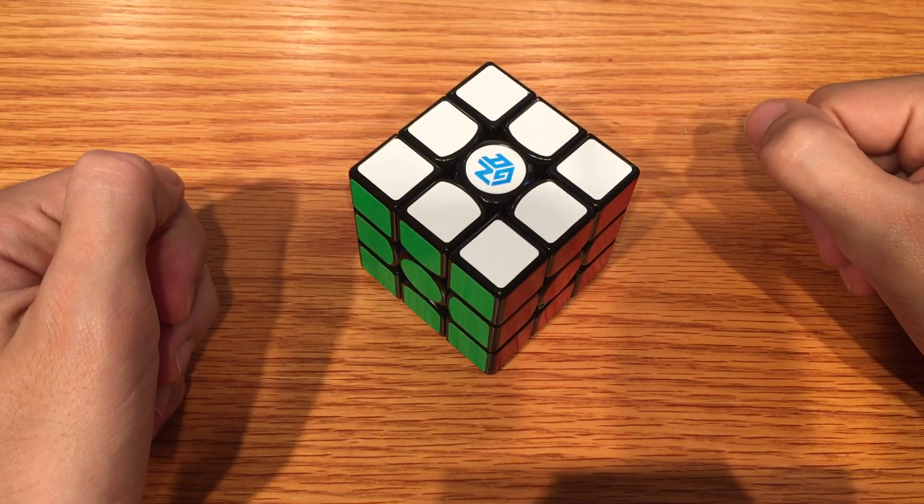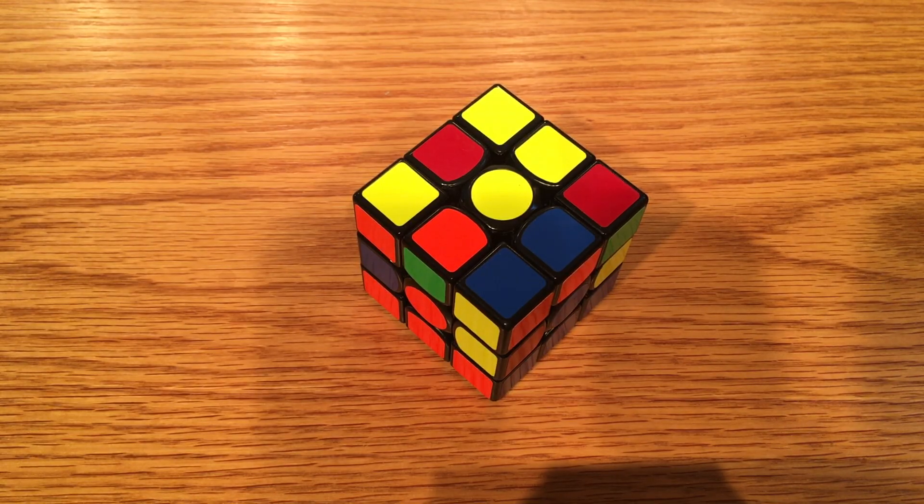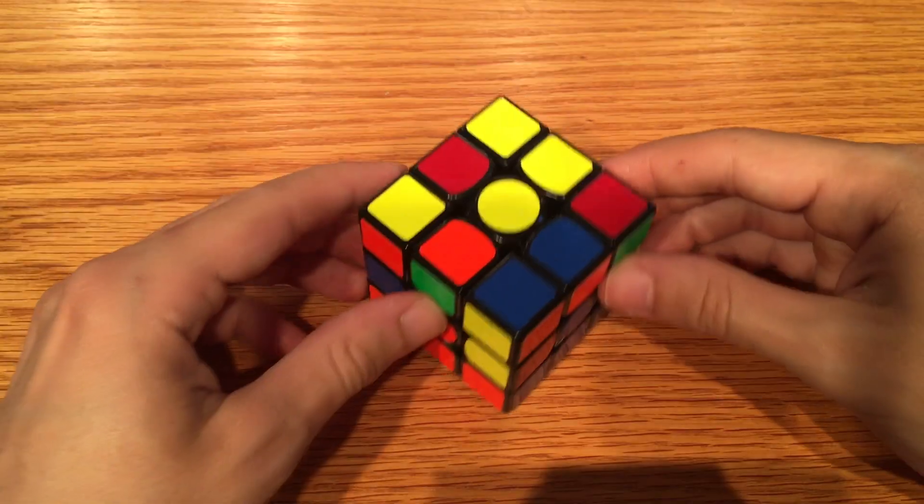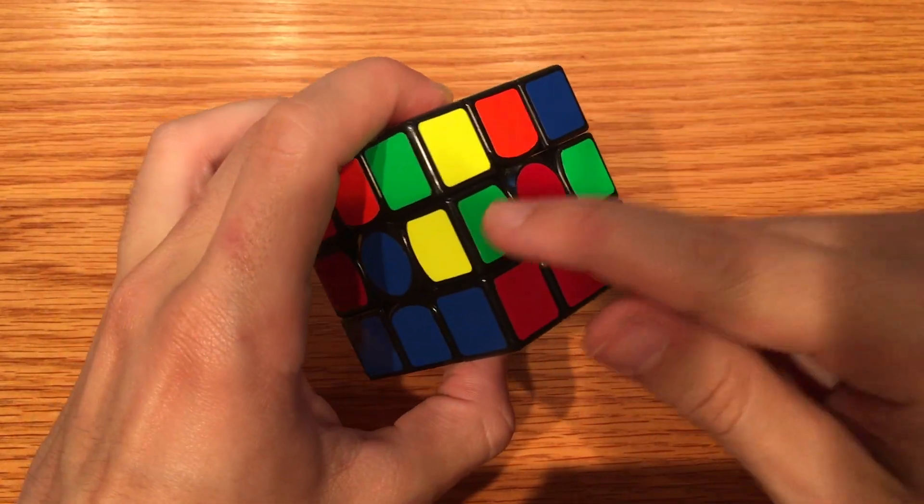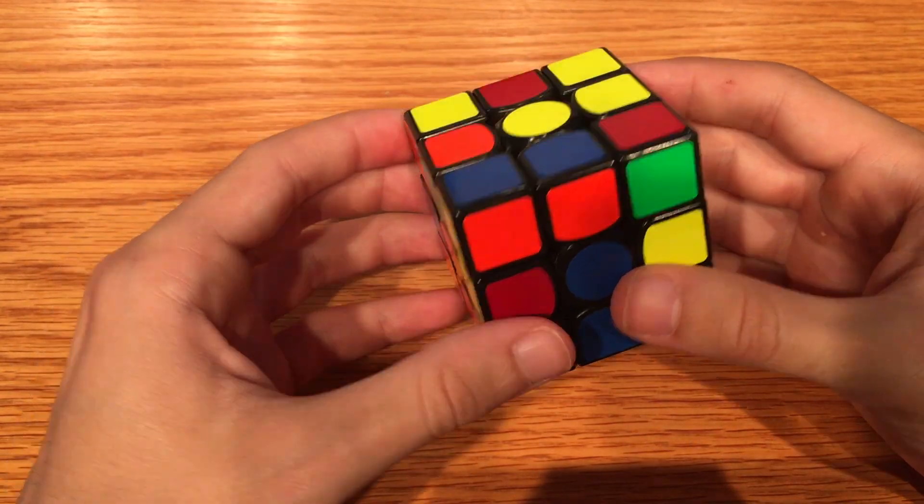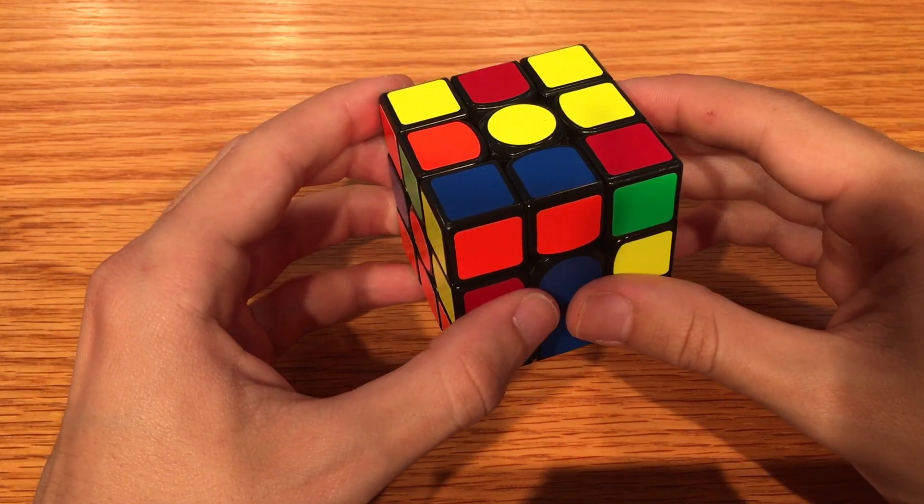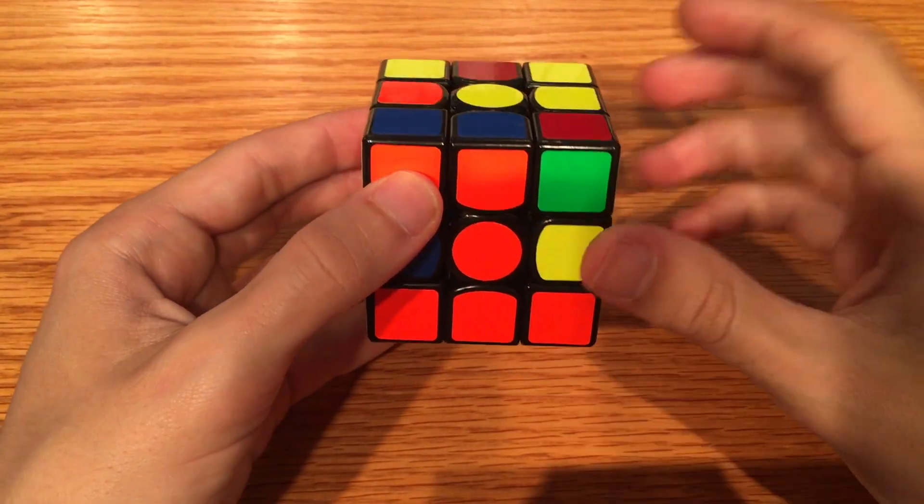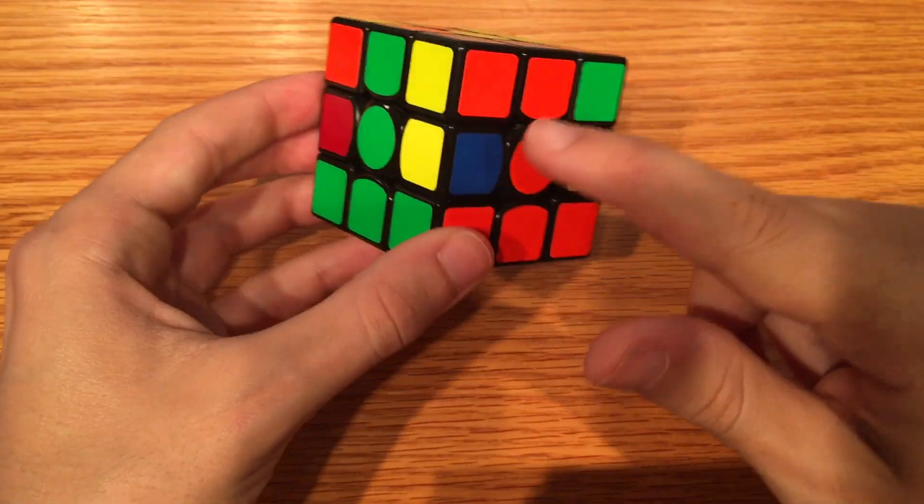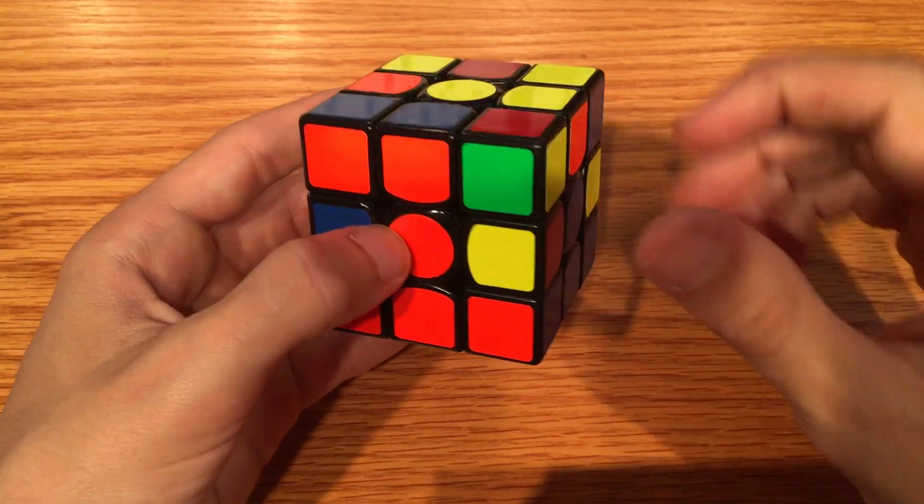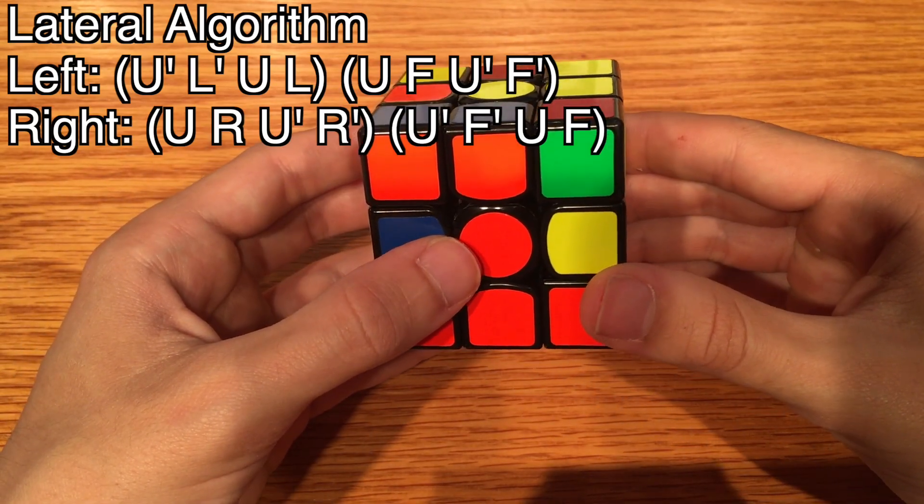Let's start with what we already know. We know that if we finish our first layer, the next step is to solve the laterals. We find a non-yellow edge on top, line it up to make a vertical bar, check to see which direction it goes. This one goes to the right, and perform the lateral algorithm.